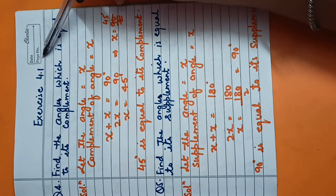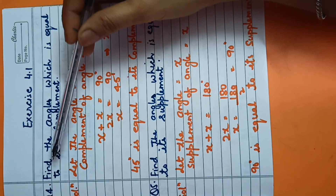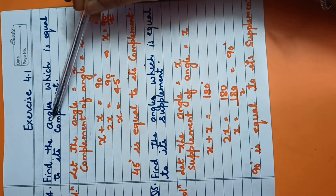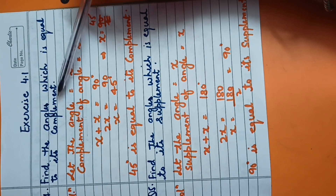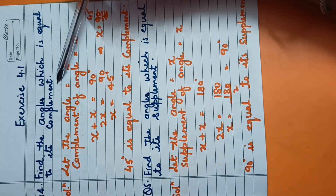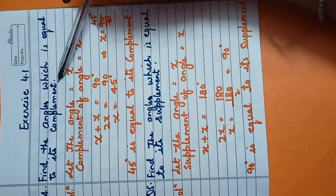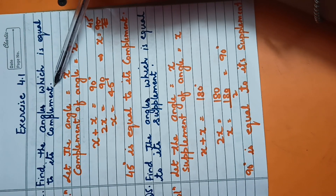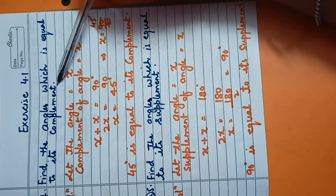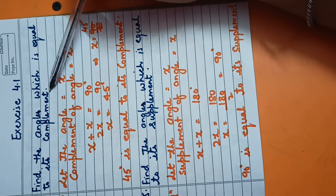Exercise 4.1, question number 4: find the angle which is equal to its complement. Children, complementary angles are those angles whose sum is 90 degrees.